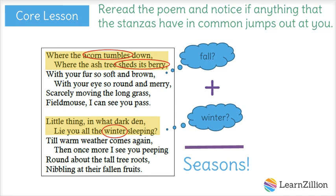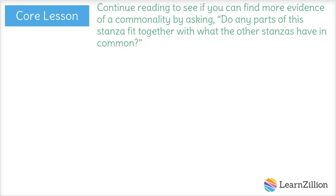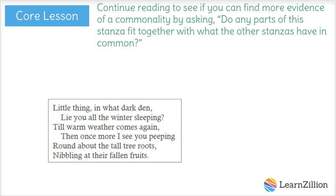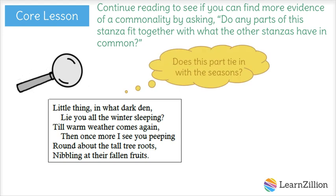So now I'm going to move on to step two and continue reading to see if I can find more evidence of a commonality by asking, does this part tie in with what the other stanzas have in common? So specifically, I'll be looking for more evidence that ties in with the seasons. I'll pick up where I left off in stanza two. Look, the very next lines say, "Till warm weather comes again, then once more I see you peeping."